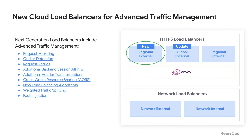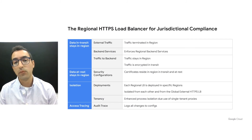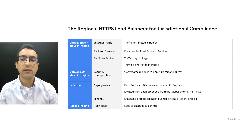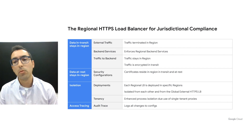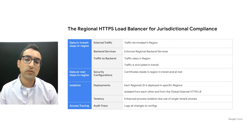We have many customers asking which cloud products to use when workloads require keeping data within a given region. The regional external and internal load balancers can help. Key properties include: data in transit stays in region, traffic is terminated in the region where the regional external load balancer is configured, regional backend services are enforced, and traffic remains in region as it's proxied to backends and is encrypted in transit. Data at rest also stays in region, certificates reside in region both in transit and at rest, and deployments of regional load balancers are isolated from each other and from the global external HTTPS load balancer, with enhanced process isolation via single-tenant proxies.